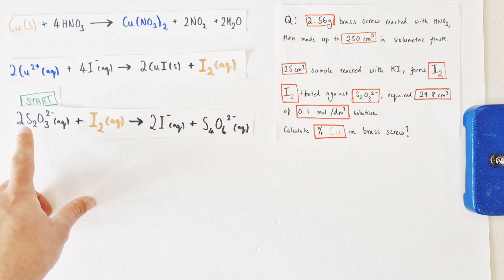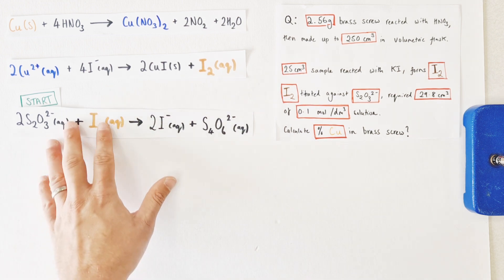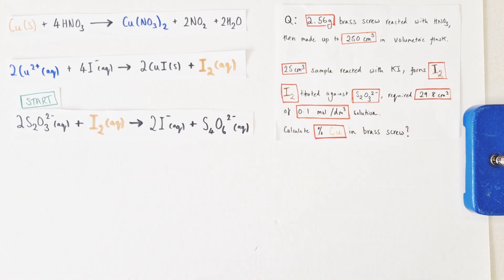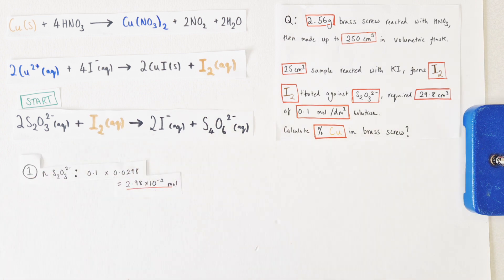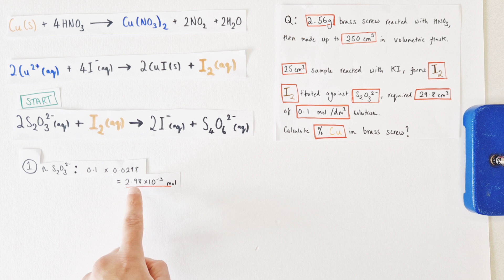Our starting point must be the sodium thiosulfate or the thiosulfate ions because that's the only thing we have both a volume and concentration for which we could then work out the moles of. So moles is concentration times volume in decimeters cubed. There are a thousand centimeters cubed in one decimeter cubed. So 0.1 times 0.0298, which is 29.8 divided by a thousand, means we have 2.98 times 10 to the minus three moles worth of thiosulfate ions present in our titration.